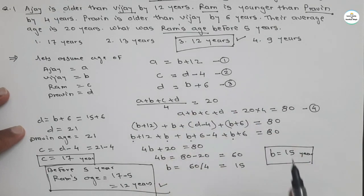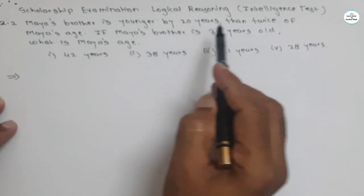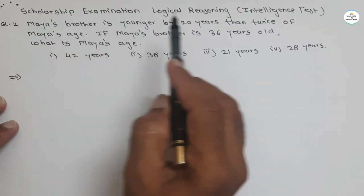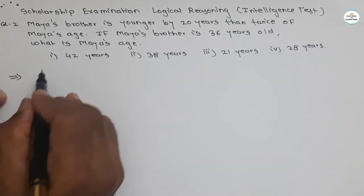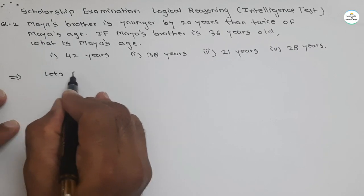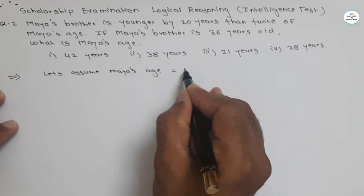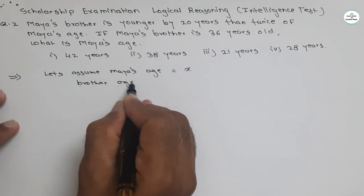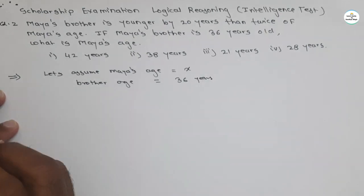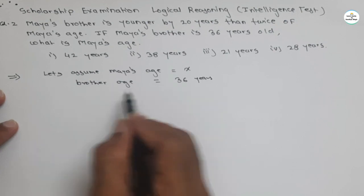Now see this next question — also under scholarship examination logical reasoning. Maya's brother is younger by 20 years than twice Maya's age. If Maya's brother is 36 years old, what is Maya's age? Options are given. To solve this, let's assume Maya's age as x, and we know brother's age is equal to 36. The condition is brother is younger by 20 years than twice Maya's age.